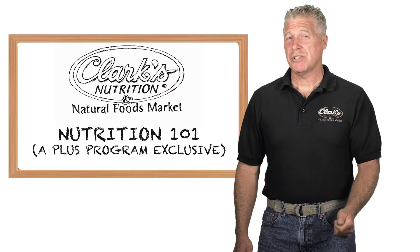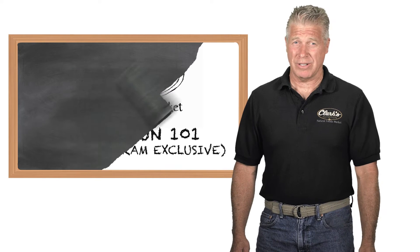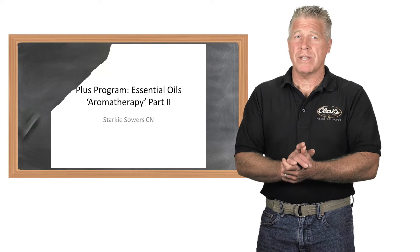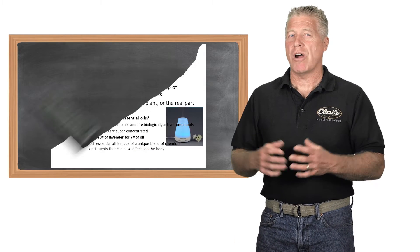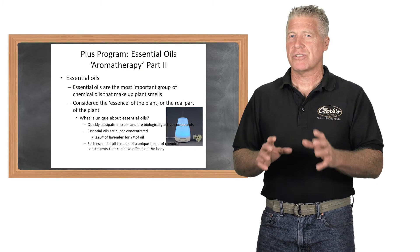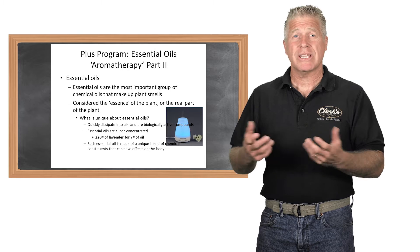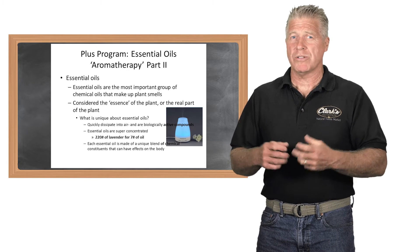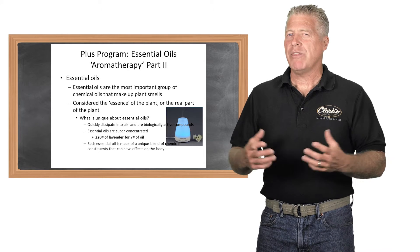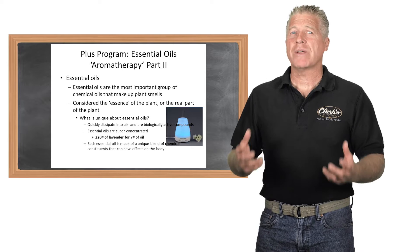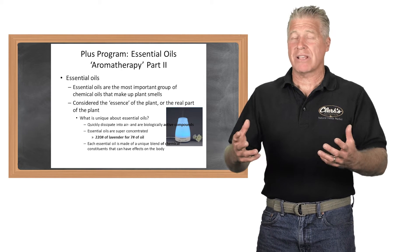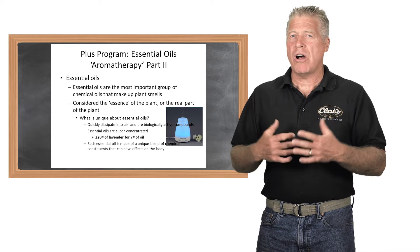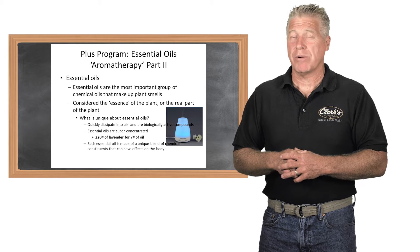Welcome again to another Plus Program training series. Today's topic is essential oils, and this is part two. In part one, we covered what essential oils are — they are the essences of a plant. Every single cell and every part of the plant contains essential oils, including the leaves, bark, and roots. These are the active chemical constituents found in plants, representing the vitality of the plant itself. When we use them, they bring about all sorts of healing qualities, which is known as aromatherapy.